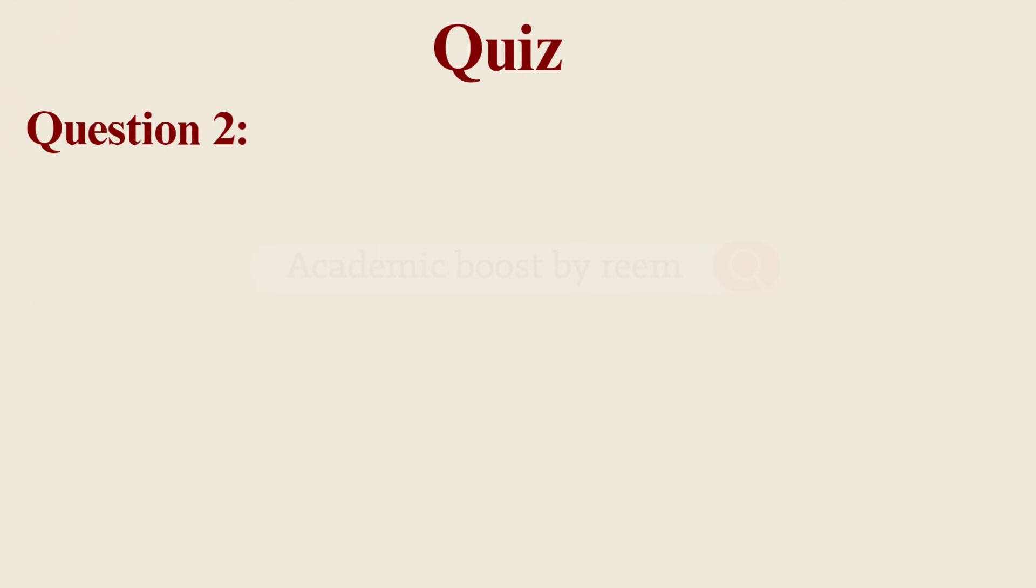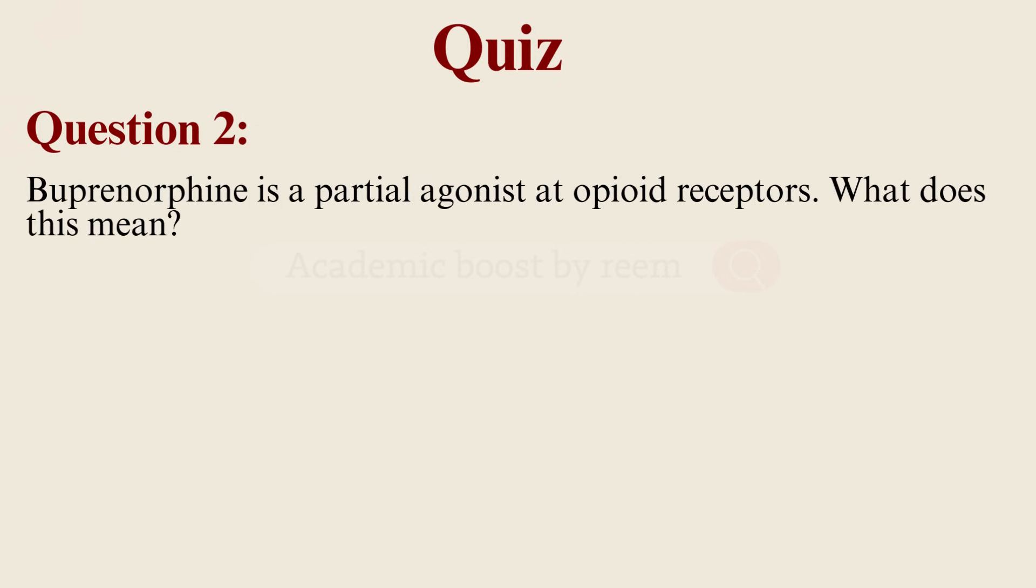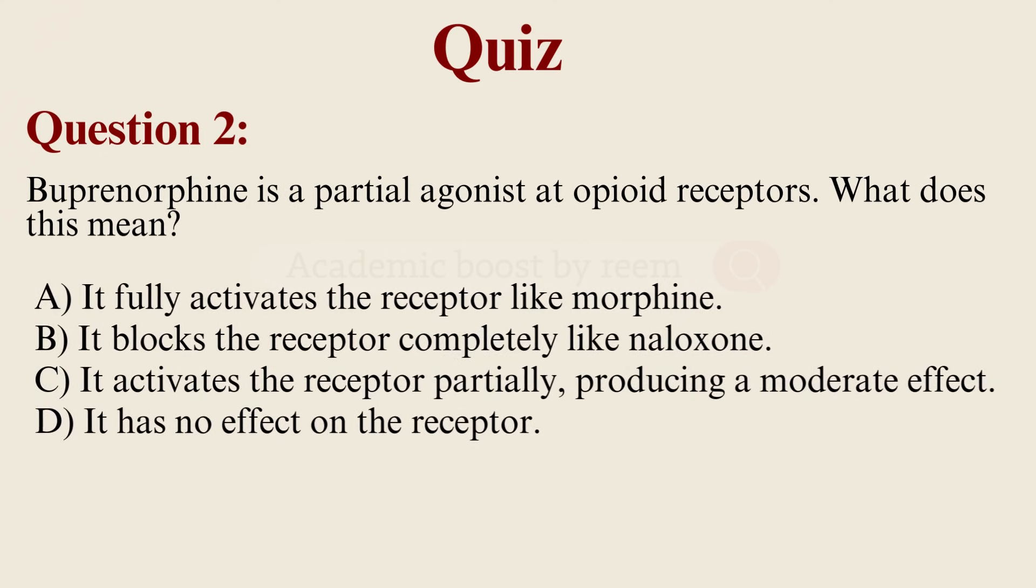Question number two: buprenorphine is a partial agonist at opioid receptors. What does this mean? A, B, C, or D?